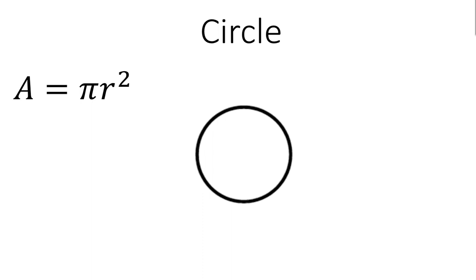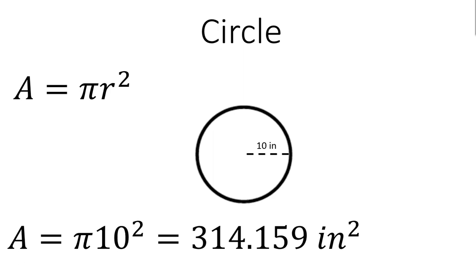Last, I have a circle. The area of a circle is equal to pi r squared, where r stands for the radius. The radius is measured from the center of the circle, and this circle has a radius of 10 inches. Substituting into the formula, the area is equal to pi times 10 squared, which equals 314.159 inches squared, rounded to the thousandths place.